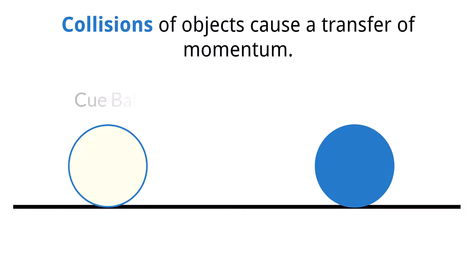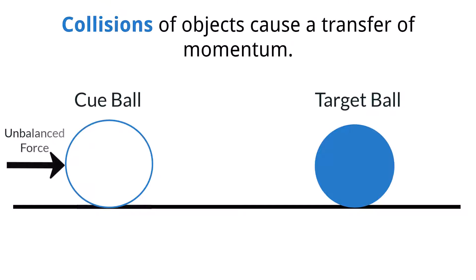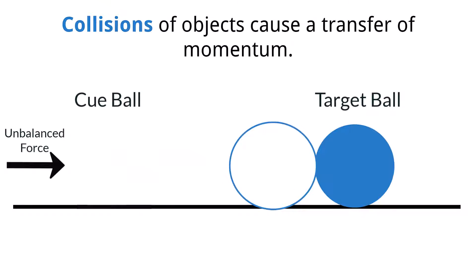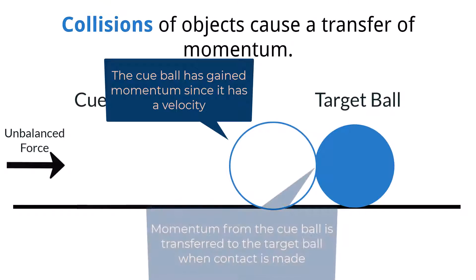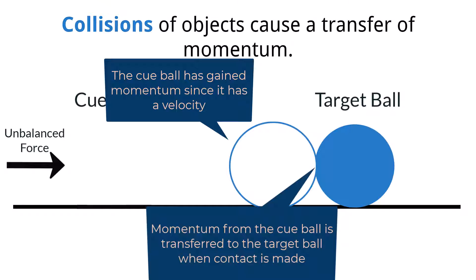Consider a game of billiards. The goal of billiards is to use your cue ball to collide with other billiard balls and cause them to sink into the pockets. In order to get these billiard balls to move at the correct velocity, the transfer of momentum between the cue ball and its target must be considered. If the cue ball is struck with a large force, the cue ball will accelerate and gain a large amount of momentum. That momentum will then be transferred to its target billiard ball, causing the ball that was hit to accelerate. The amount of momentum originally given to the cue ball determines how much momentum will be transferred to the target ball.